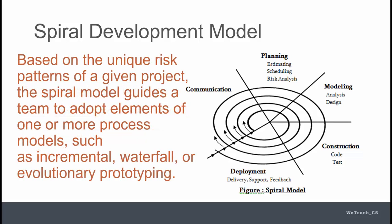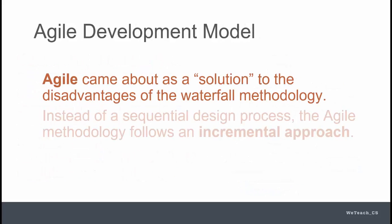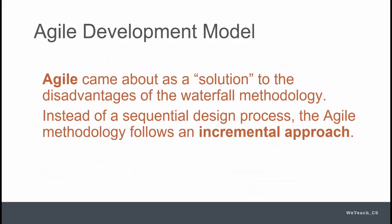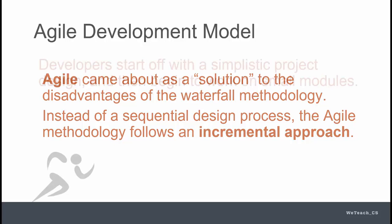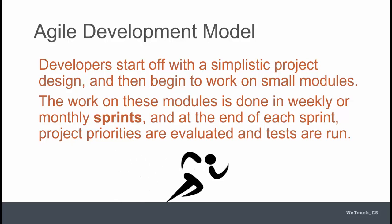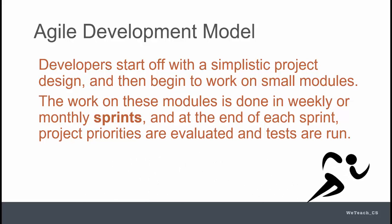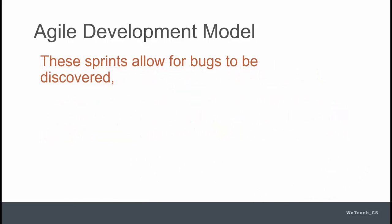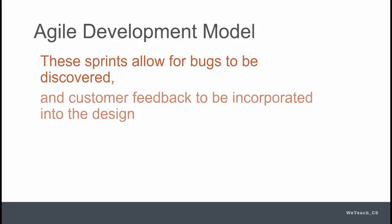In today's software development world, a process called agile is commonly used, which involves the incremental approach to a great degree, using a feature called the sprint, where weekly or monthly goals are established and achieved, followed by testing and evaluation, again in a circular process involving customer feedback.